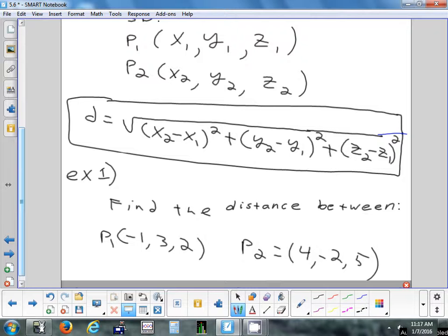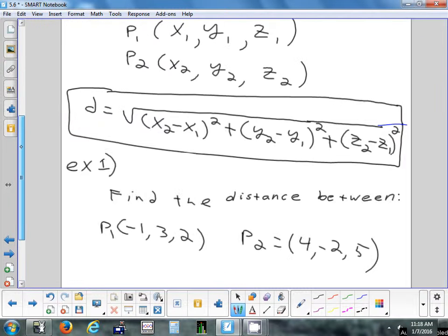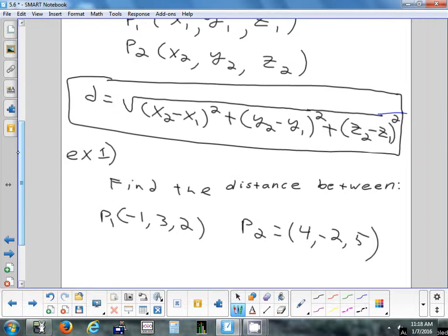All right, so let's find the distance between those two points. P1 is negative 1, 3, 2, and P2 is 4, negative 2, 5. Everything we do today, as I just said, it's all going to be formulas. We're not going to be sketching this in 3D. That's pretty challenging, so we'll stick with just doing arithmetic and formulas.